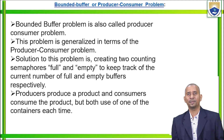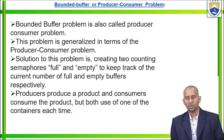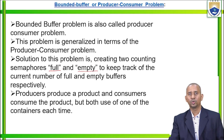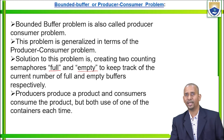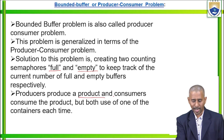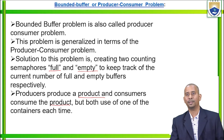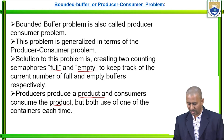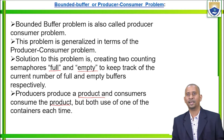This particular problem is generalized in terms of the producer-consumer problem. The solution for the bounded buffer problem involves creating two counting semaphores: full and empty. These two counting semaphores — full and empty — keep track of the current number of full and empty buffers respectively. Producers produce a product and consumers consume the product, but both use one of the containers each time.